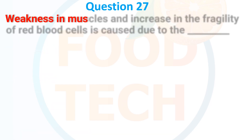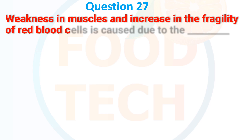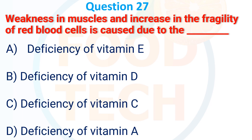Question 27. Weakness in muscle and increased fragility in red blood cells — this is caused by: A. Deficiency of vitamin E. B. Deficiency of vitamin D. C. Deficiency of vitamin C. D. Deficiency of vitamin A. The correct answer is A: deficiency of vitamin E.